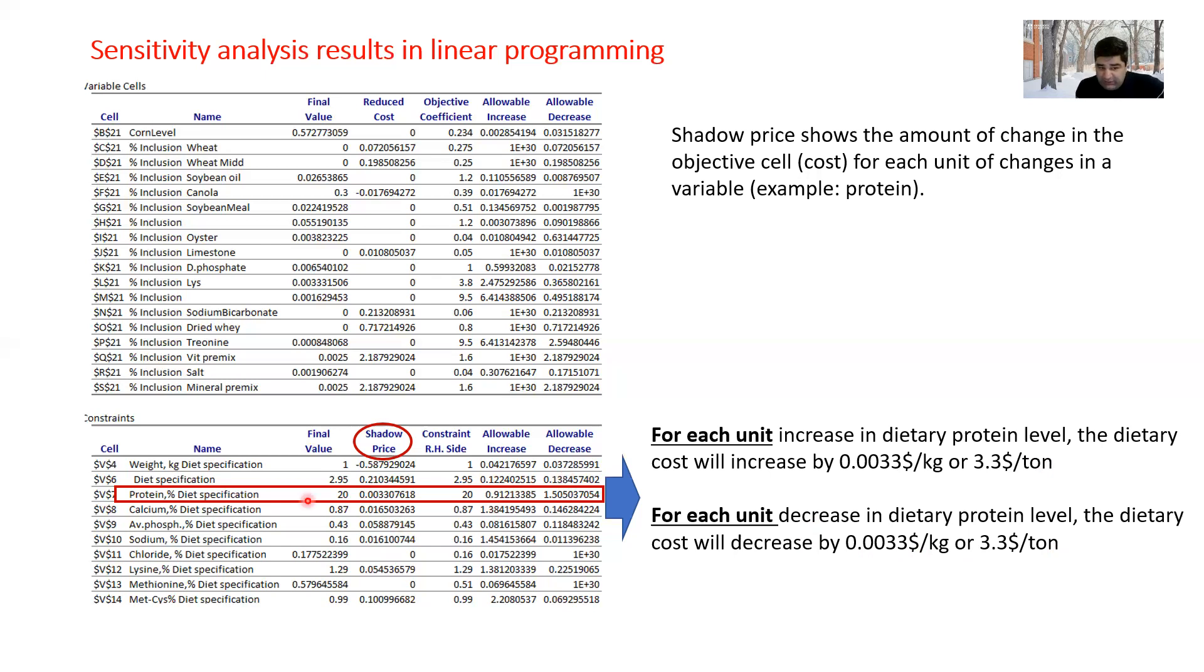It means that if protein level goes up all the way by the amount shown here or comes down by the amount shown under allowable decrease, then this shadow price would be the same. But if the changes in dietary protein is beyond that range, then it would require me to resolve the program or rerun the solver function. Therefore, this shadow price is true in a range of 18.5 percent to 20.91 percent of dietary protein.